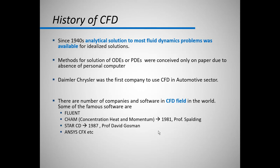So it was very hard to solve anything on computer. People usually trust on the paper work rather than on computers. Daimler Chrysler was the first company to use CFD in automotive sector. And then later on in the end of the 20th century there are a number of companies and software in the CFD field in the world that emerged. And some of the famous softwares are Fluent, CFX, Star-CD, Star-CCM+, FAST-RUN, CHAM Concentration Heat and Momentum which was developed in 1981 by Professor Spalding. Star-CD was developed in 1987 by Professor David Gosman.